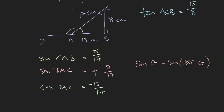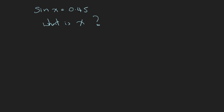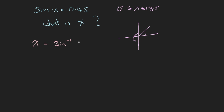Let's look at this last example: sine x equals 0.45. What is the value of x? There's additional information: x is an angle between 0 and 180 degrees. From previous examples, you know the value for x can be a certain angle here, or an equivalent angle there. So x could be in the first segment or the second segment — there may be more than one answer. To find it, you take x equals sine inverse of 0.45 on the calculator.